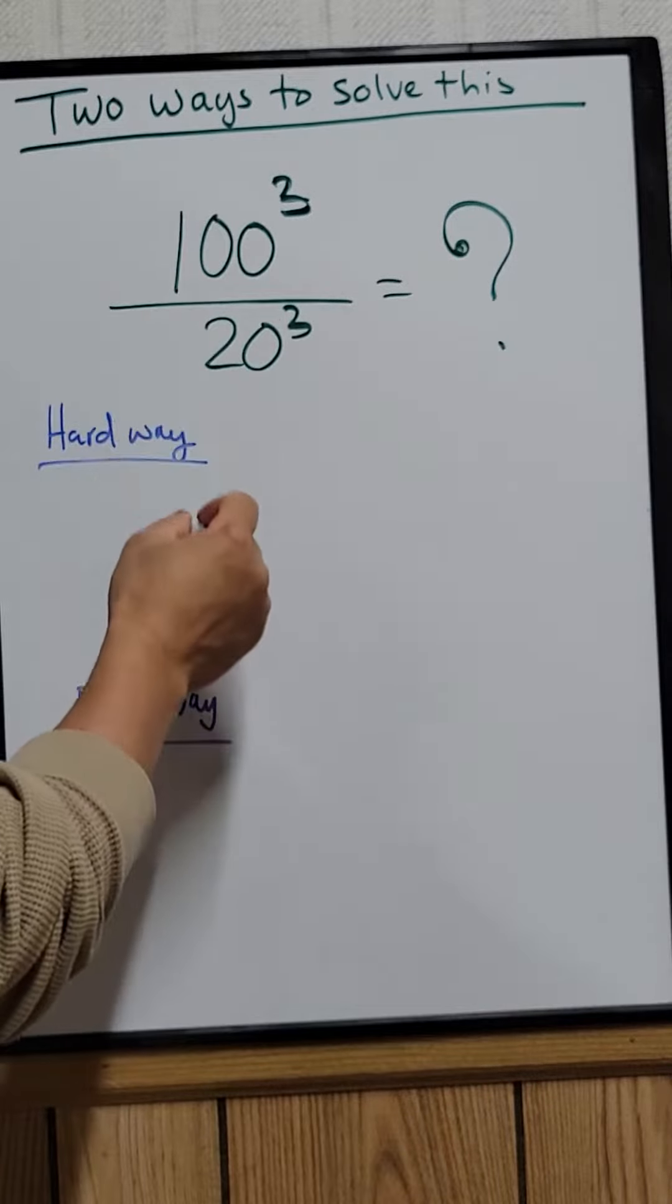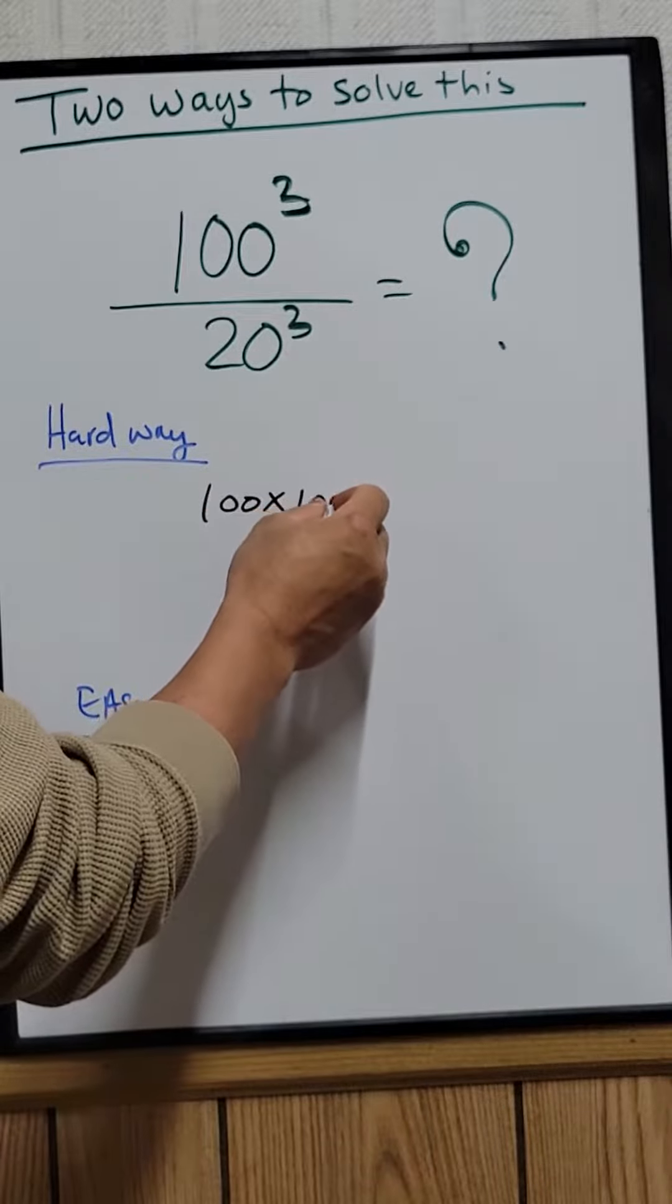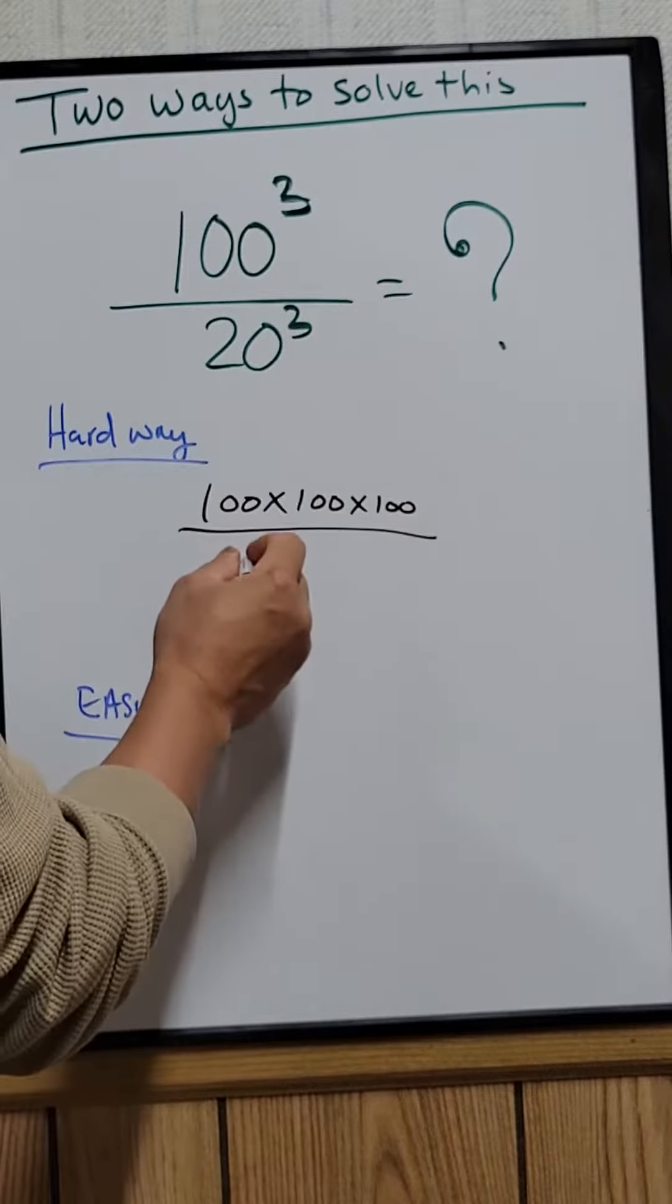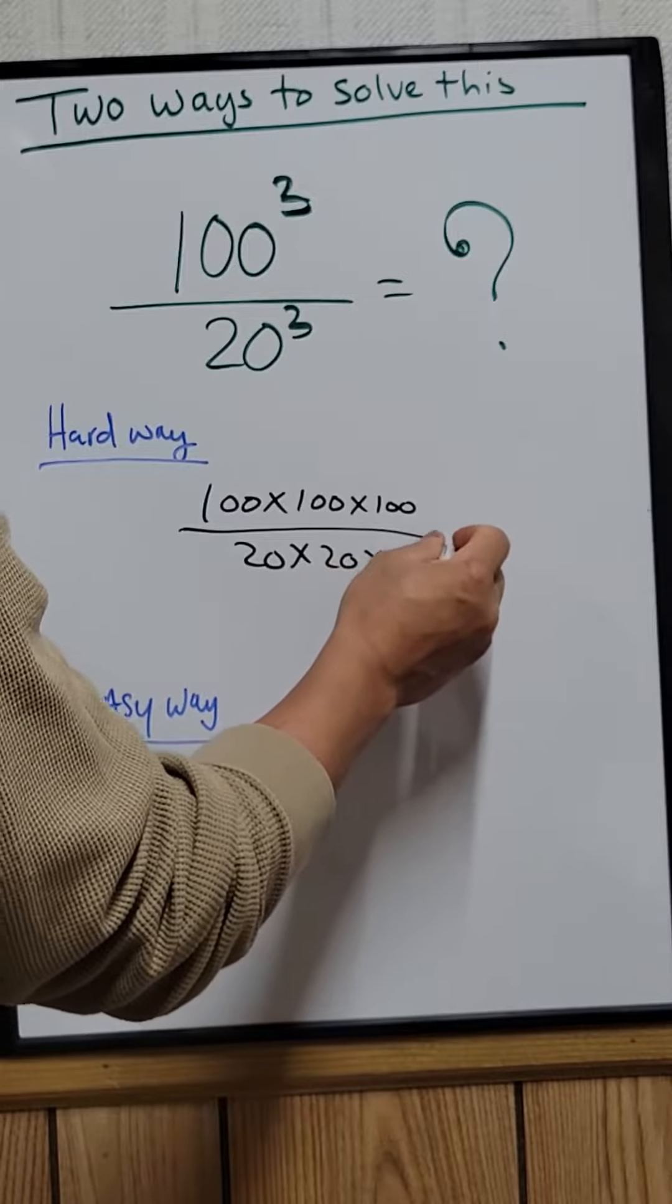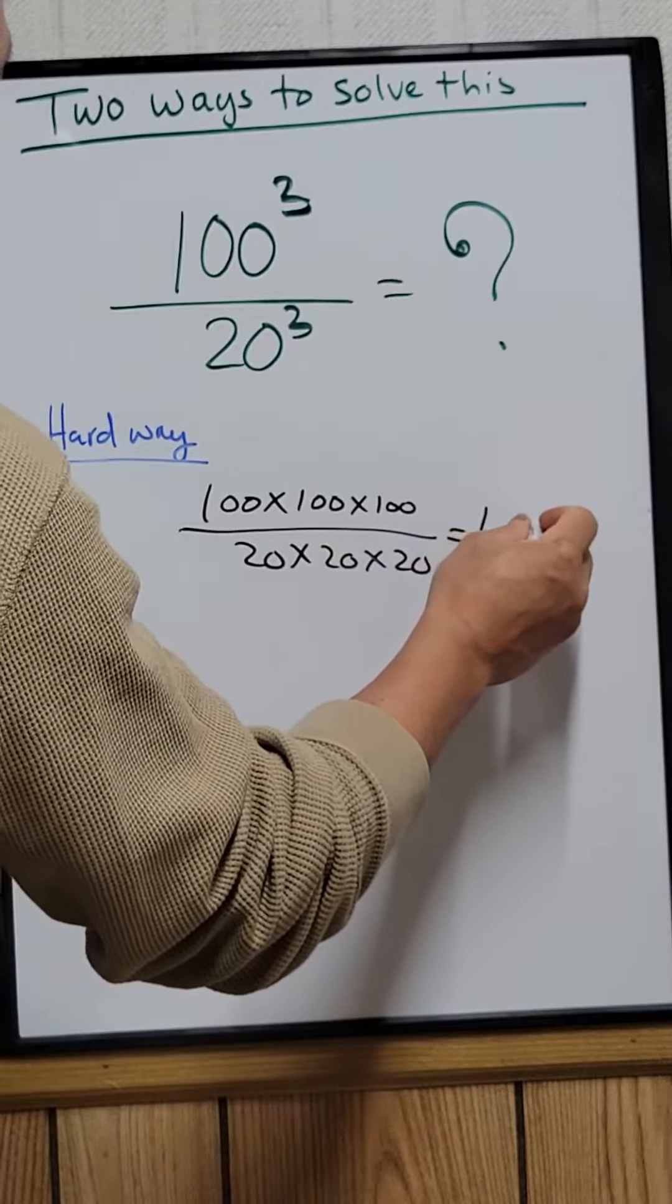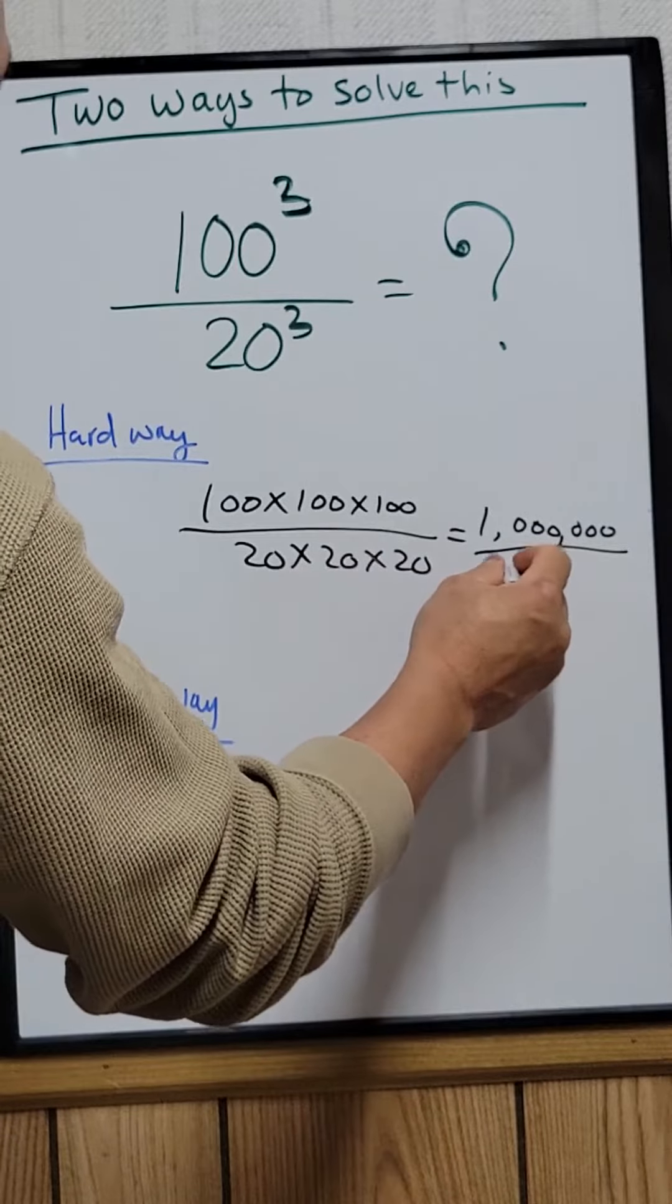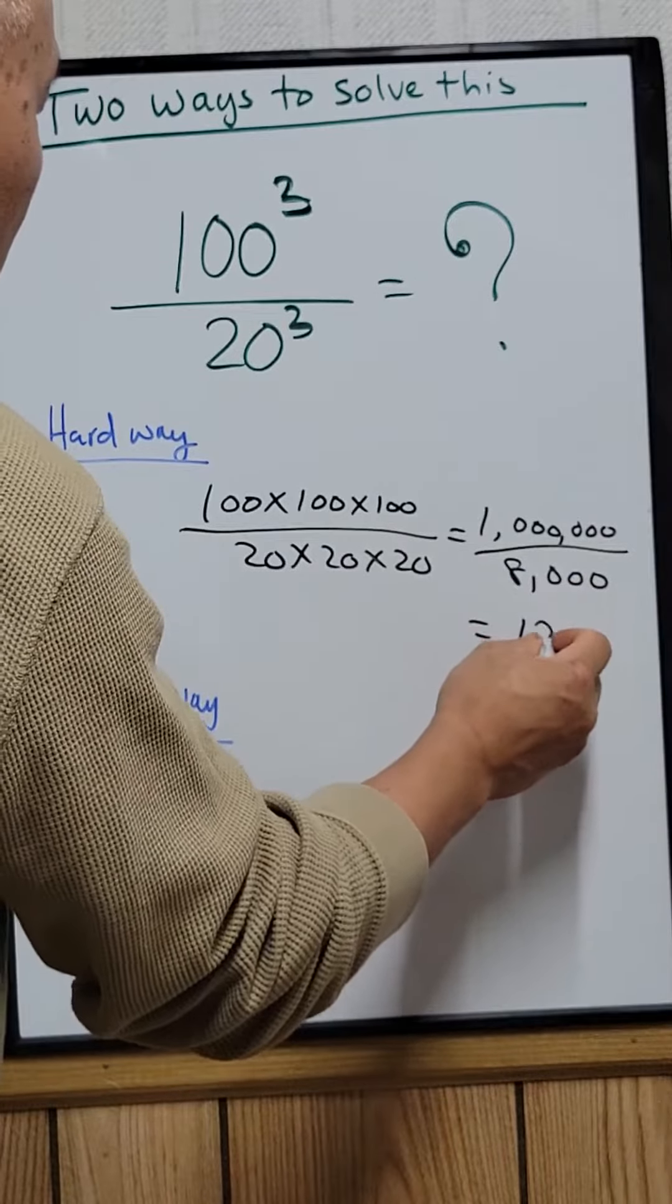The hard way would just take the 100 times 100 times 100 divided by 20 times 20 times 20, which equal to 1 million divided by 8000, which equal to 125.